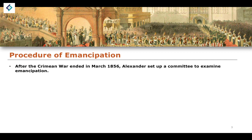The Crimean War ended a year after Alexander took the throne, in March of 1856 — Alexander having taken the throne in March of 1855. After the Crimean War ended, Alexander set up a committee to examine emancipation: to examine the pros and cons, and the possible procedure through which emancipation was going to take place.